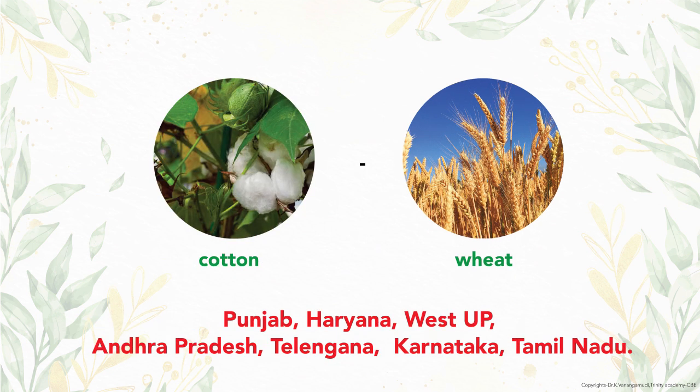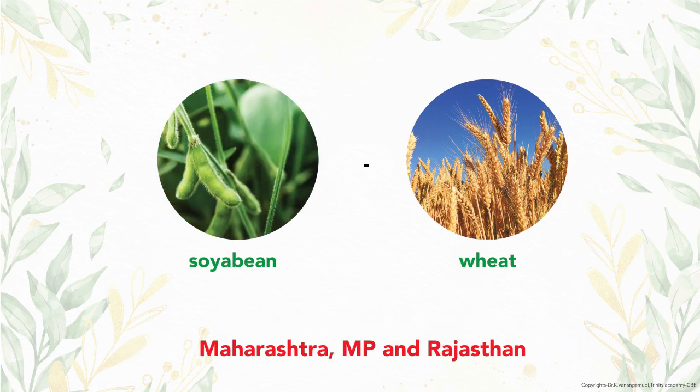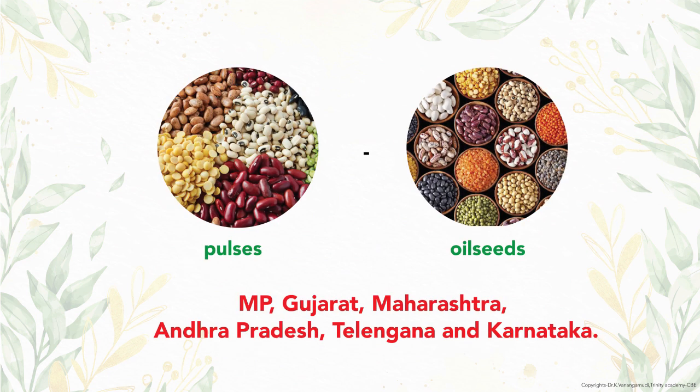Cotton–wheat is followed in Punjab, Haryana, West Uttar Pradesh, Andhra Pradesh, Telangana, Karnataka, and Tamil Nadu. Soybean–wheat is followed in Maharashtra, Madhya Pradesh, and Rajasthan. The legume-based cropping system — pulses and oilseeds — is followed in Madhya Pradesh, Gujarat, Maharashtra, Andhra Pradesh, Telangana, and Karnataka.